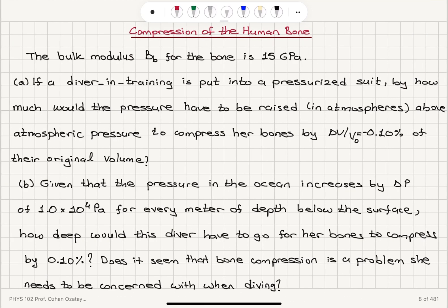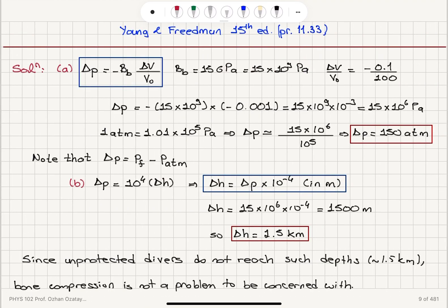Because an increasing pressure decreases the volume typically, we have to put a minus sign here so that the bulk modulus is a positive quantity. The bulk modulus for the bone is given, it's 15 gigapascals, and we want to know by how much the pressure will have to change in order to have a bone compression by minus 0.1%. The bulk modulus of the bone is 15 times 10 to 9 Pascals, and delta V over V zero is minus 0.1 over 100. That's the fractional change in the volume.